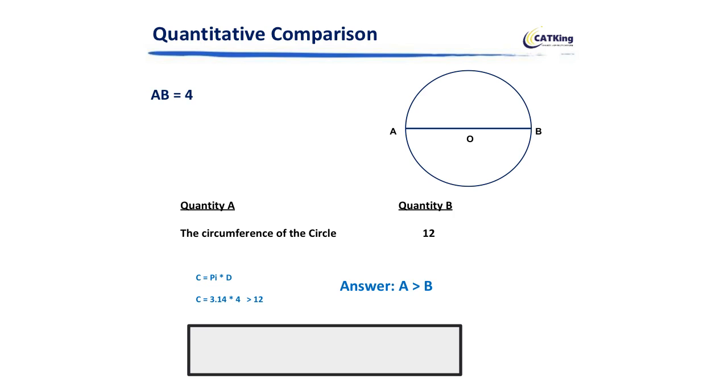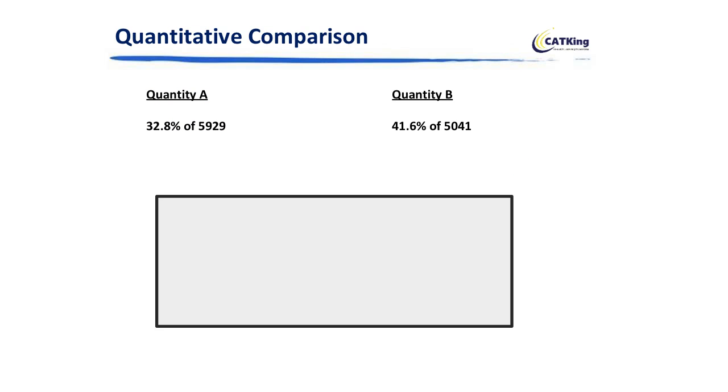If I multiply, I will get 3.14 times 4. Definitely it's going to be more than 12 because 3 times 4 is 12. So my answer is pretty obvious: A is greater than B. Very simple, you will take less than 10 seconds for such kind of easy questions. But in the exam we may not always get such easy questions. This is to understand what the type of questions are. The next two examples which I'm going to take are actual CET-wise questions.